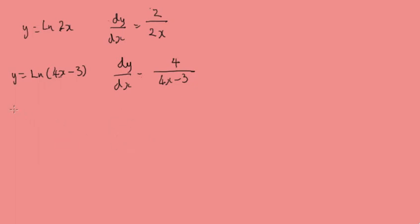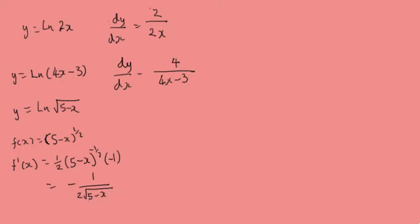And if we had y equals log of the square root of 5 minus x. Now there's two ways to do this one. So we can do the inside derivative, so we can think of f of x equal to 5 minus x to the half. And then f dashed of x would be a half, 5 minus x to the minus a half, times minus 1, which is minus 1 over 2 root of 5 minus x.